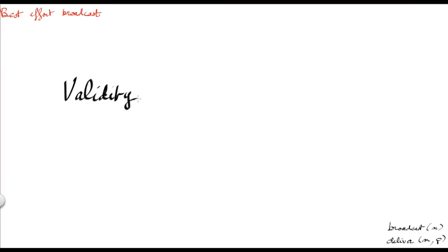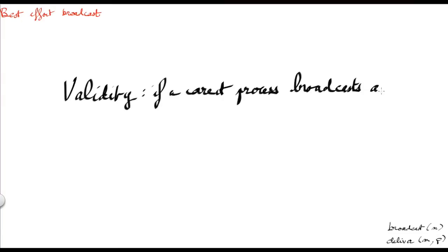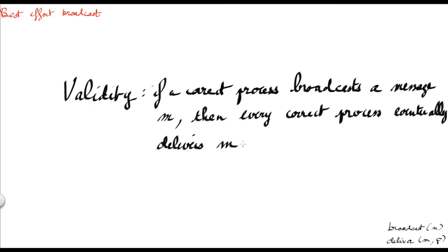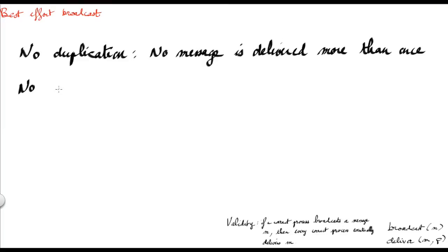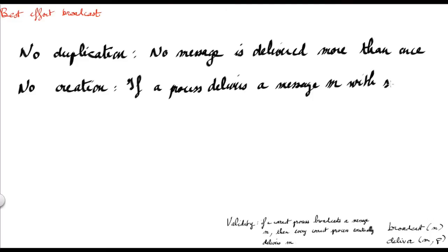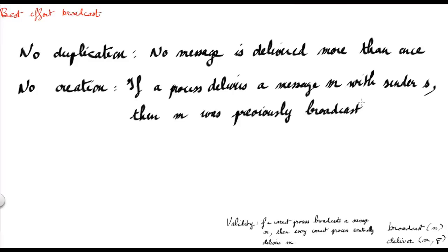The first property is called validity, and states that if a correct process broadcasts a message m, then every correct process eventually delivers m. Here, correct means the process won't crash, while faulty means it will crash and stop functioning. The second property, called no duplication, states that no message is delivered more than once. The third property, called no creation, states that if a process delivers a message m with sender s, then m was previously broadcast by process s.